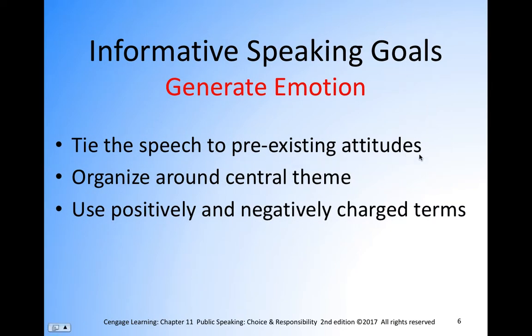Tie the speech to pre-existing attitudes. If you want to generate emotion, tie that speech to something your audience has already considered. If this is a new topic to them, connect it to something very familiar. Organize your speech around a central theme — you could use chronological, sequential, spatial, or logical organizational methods. These all give you a central theme that makes your speech very clear to your audience. Also use positively and negatively charged terms to give impact and evoke emotion from your audience.